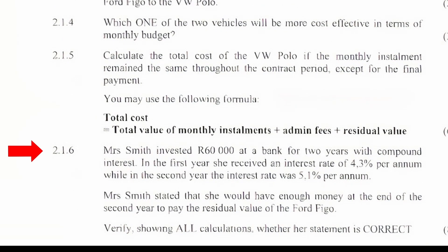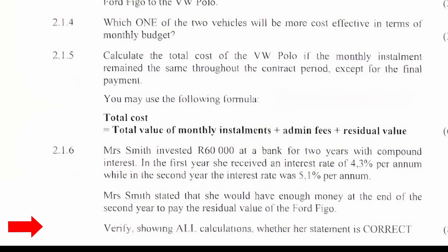Question 2.1.6: Mrs. Smith invested R60,000 at a bank for two years with compound interest. In the first year, she received an interest rate of 4.3% per annum, while in the second year the interest rate was 5.1% per annum. Mrs. Smith stated that she would have enough money at the end of the second year to pay the residual value of the Ford Figo. Verify, showing all calculations, whether the statement is correct.